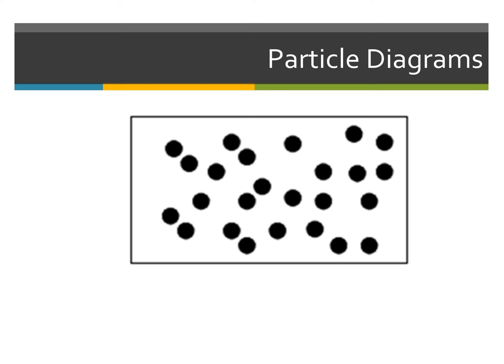Now we're going to talk about particle diagrams today. What we see in front of you is a particle diagram — a diagram that has some type of dots or other items that represent different particles or atoms. If we look at our particle diagram, we see that it consists of one type of dot. That means this particle diagram is showing us a single element. So we're going to call these atoms element one. This diagram only shows us that specific element, so this is going to be considered an element.